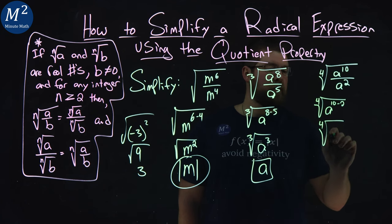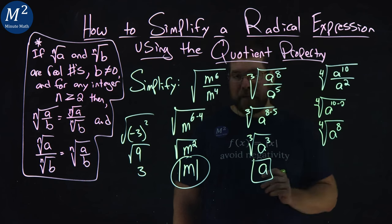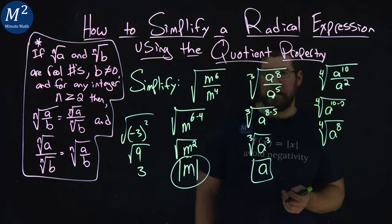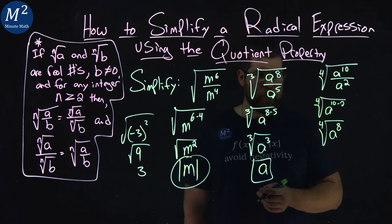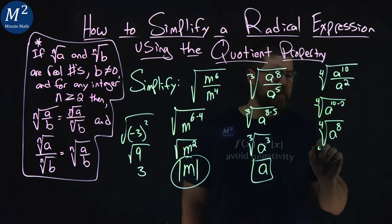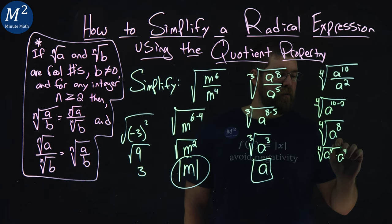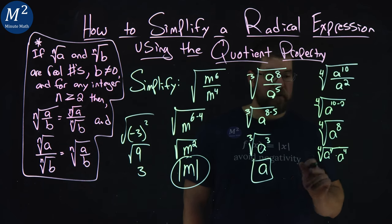Now what's the fourth root of a to the eighth power? Well, a to the eighth power, if you want to visualize this, we have fourth root of a to the fourth times a to the fourth power here. We can separate that like this if you want.